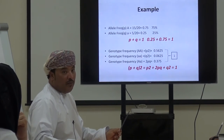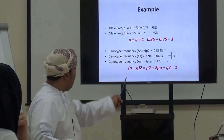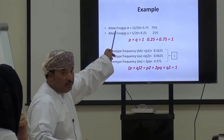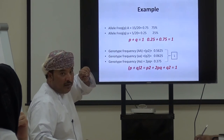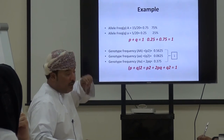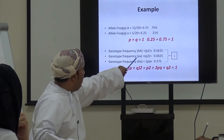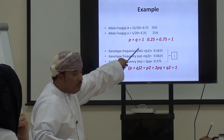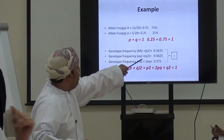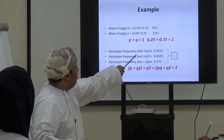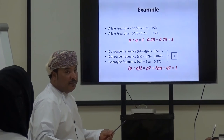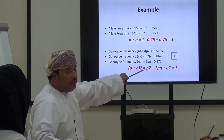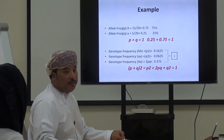Based on the allele frequency calculation, we can also calculate genotype frequency using the same formula. Genotype frequency of AA = P² = 0.75 × 0.75. For aa = Q² = 0.25 × 0.25. For the heterozygous Aa = 2PQ = 2 × 0.75 × 0.25. The total is always 1. This demonstrates the Hardy-Weinberg formula in action.